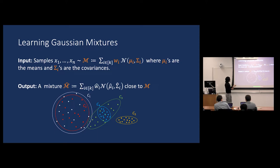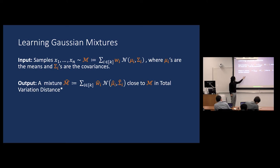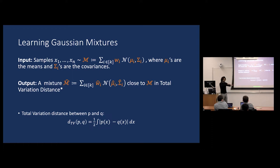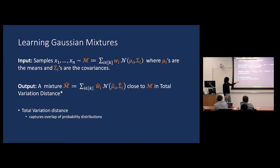Our goal is to output another mixture of k Gaussians — call it M-hat — such that this mixture is close to the original input mixture. I want M-hat to be close to M in total variation distance. Total variation distance measures overlap between probability distributions: it's half the integral of the pointwise difference between p(x) and q(x). Since we can't recover the color coding in general, it's reasonable to recover a distribution that overlaps with the input. This is information-theoretically optimal — the best guarantee you can hope to offer.